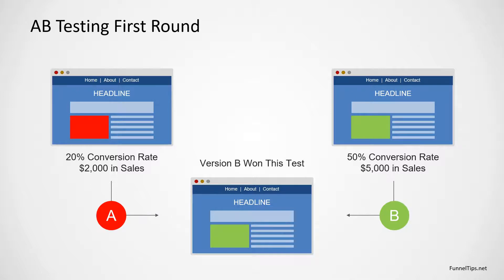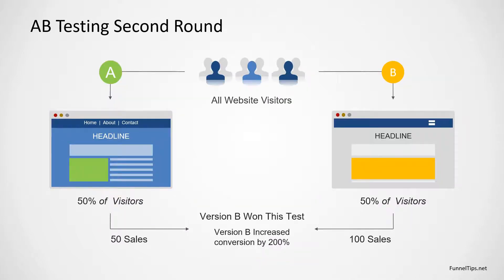At this point you could either stop your testing and switch all your traffic to version B, or you could continue to test further iterations. You've already got an improvement with version B, and you can continue to test a different area. For instance, if you've tested the video placement, you can either test that further or move on to test a different headline.